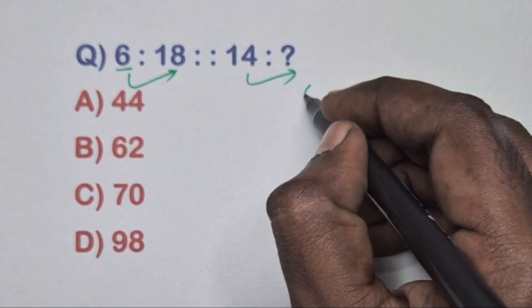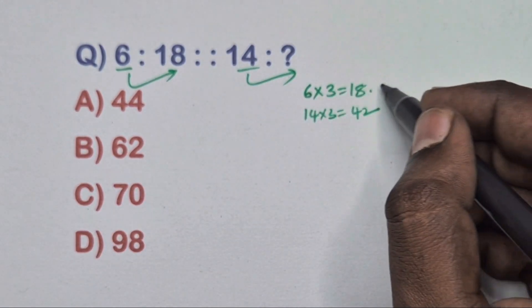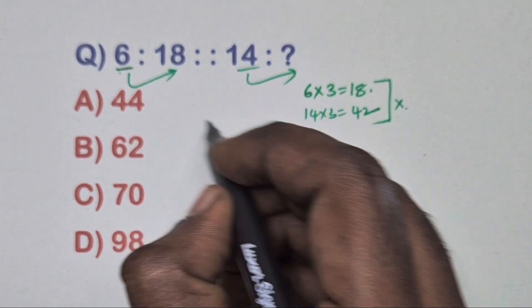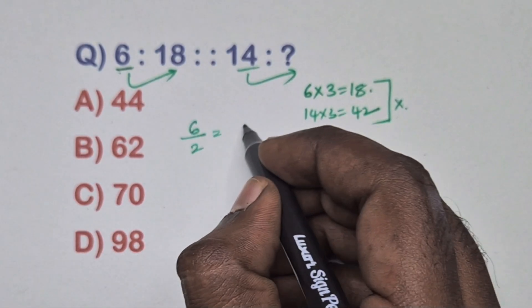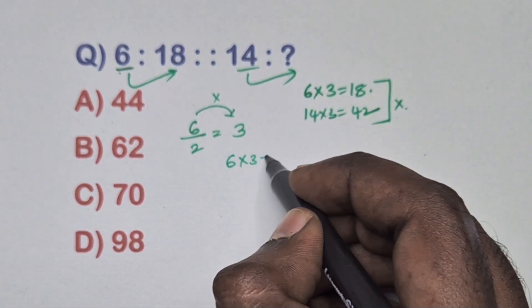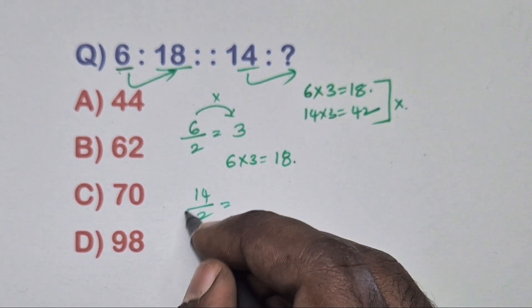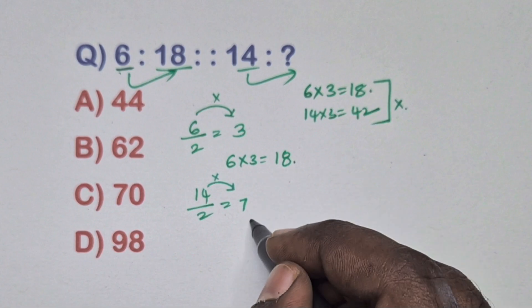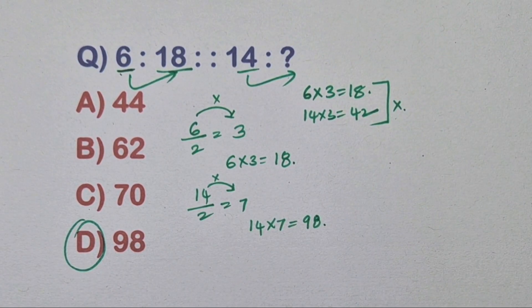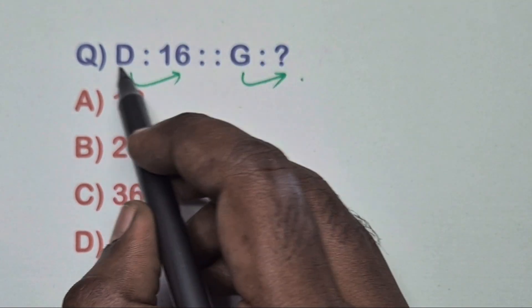Take 6: 6 × 3 = 18, and 14 × 3 = 42, but 42 is not present in the options, so this is the wrong method. Final relation: take 6, divide by 2 to get 3, then multiply 6 × 3 = 18. Same way, 14 ÷ 2 = 7, then 14 × 7 = 98. So 98 is the correct answer.